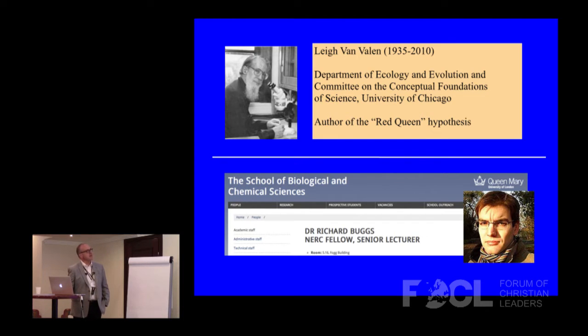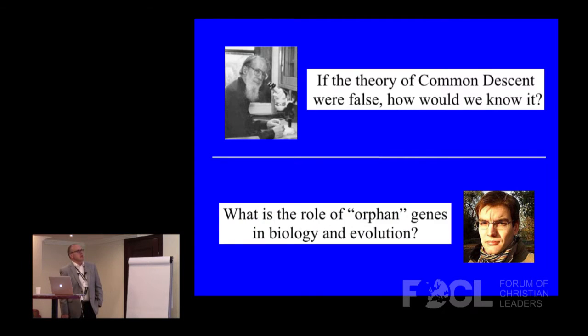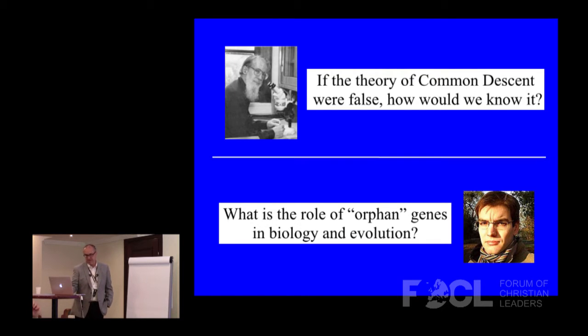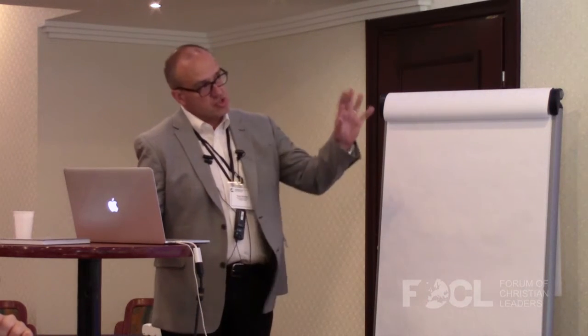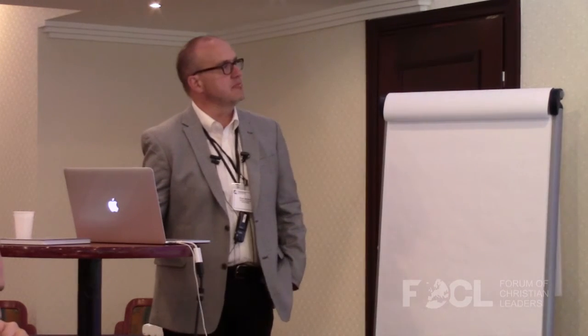The question I asked with Lee is: if the theory of common descent were false, how would we know it? This question is on the first page of my dissertation. The question I've asked with Richard is: what is the role of orphan genes in biology and evolution? These questions turn out to be intimately related to each other, and they're strongly motivating — when you ask them, all kinds of interesting implications come tumbling out.